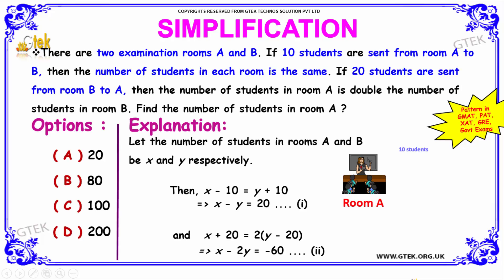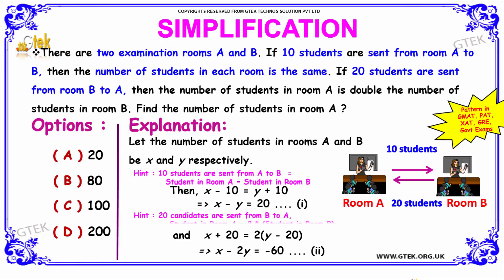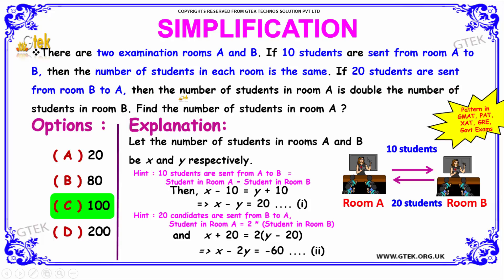The next question is: there are two examination rooms A and B. If 10 students are sent from room A to room B, then the number of students in each room is the same. If 20 students are sent from room B to A, then the number of students in room A is double the number of students in room B. Find the number of students in room A.